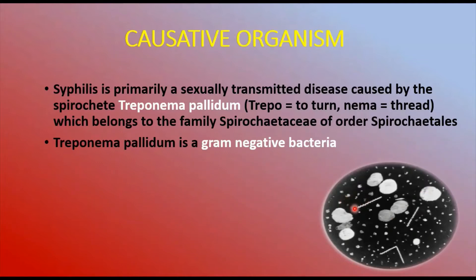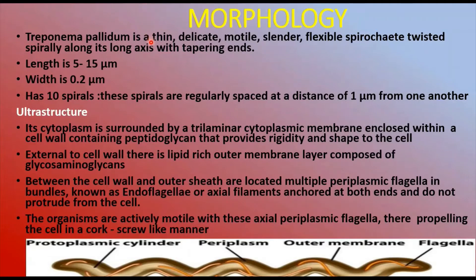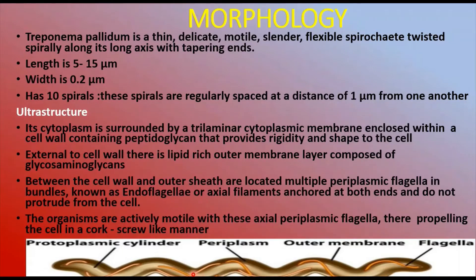Regarding the morphology of Treponema pallidum: it is a very thin, delicate, motile, slender, flexible spirochete twisted spirally along its axis with tapering ends. It is about 10 to 15 micrometers in length and about 0.15 to 0.2 micrometers in diameter. The spirochete possesses about 10 regular spirals at regular intervals of one micrometer distance.